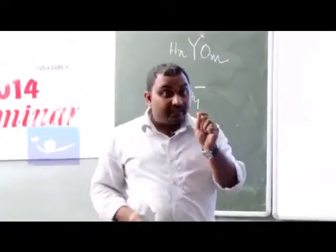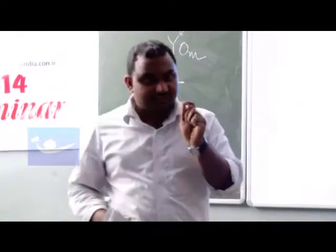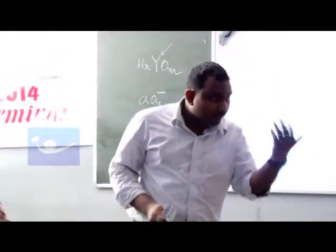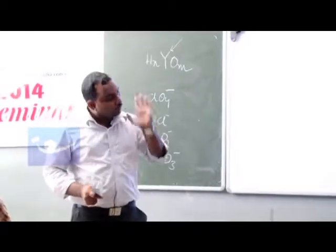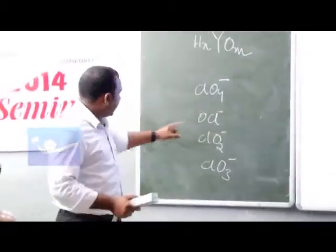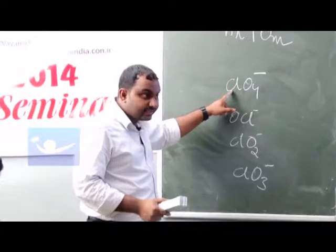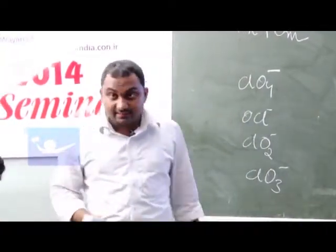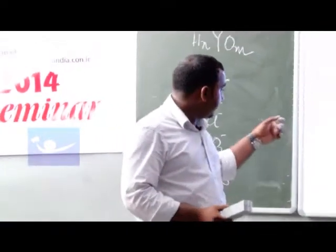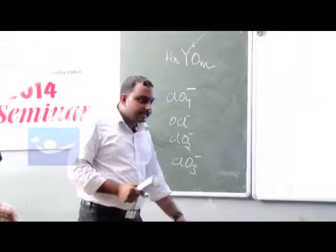In another way you can explain it like this: you have to look at the possible resonance structures. If more number of resonance structures are there for the conjugate base, it is more stable. The easy way is this - as the oxidation number of Cl increases, acidity also increases. Then which one is the answer? B is the answer.